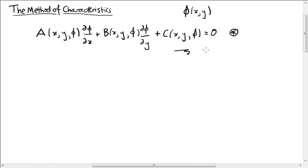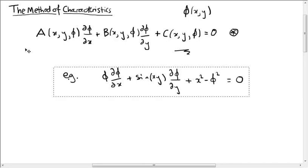Where A, B and C are all functions of x, y and phi. So phi is a function of x and y, and this is an equation for phi. So, for example, here's an example.